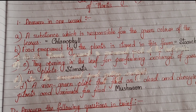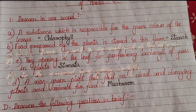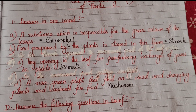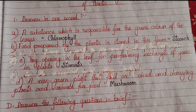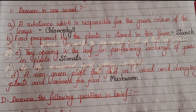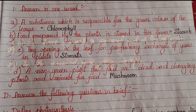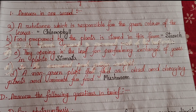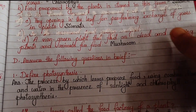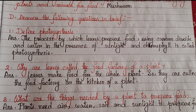Answer in one word. A: A substance which is responsible for the green color of the leaves — that is chlorophyll. B: Food prepared by plants is stored in the form of starch. C: Tiny openings in the leaves for performing exchange of gases in plants — stomata. D: A non-green plant that feeds on dead and decaying plants and animals for food — mushroom.